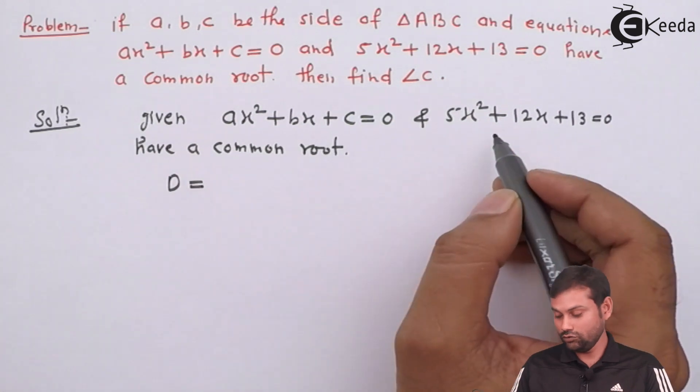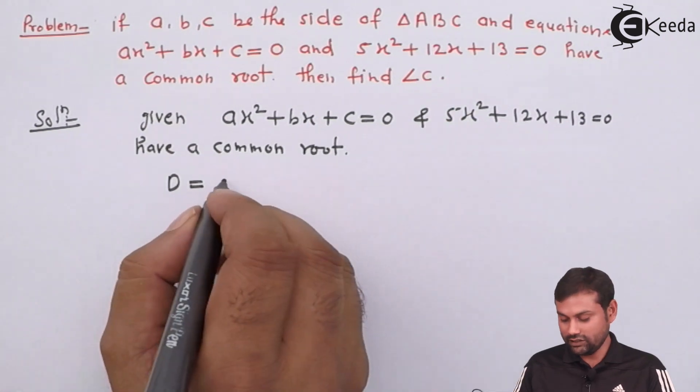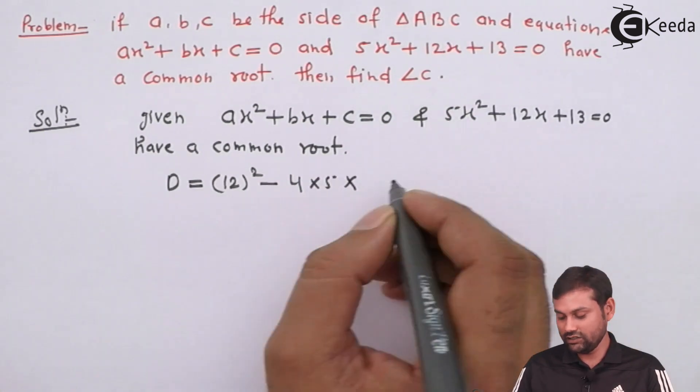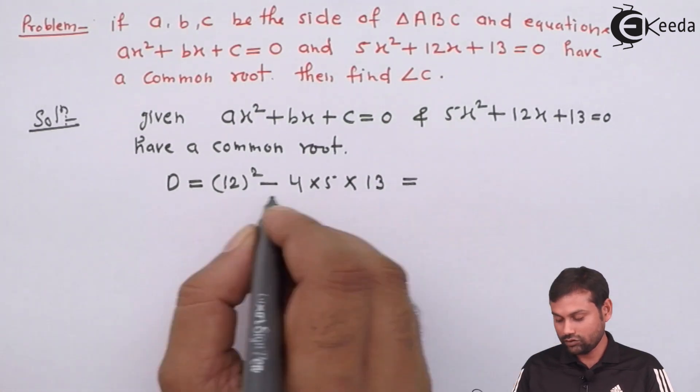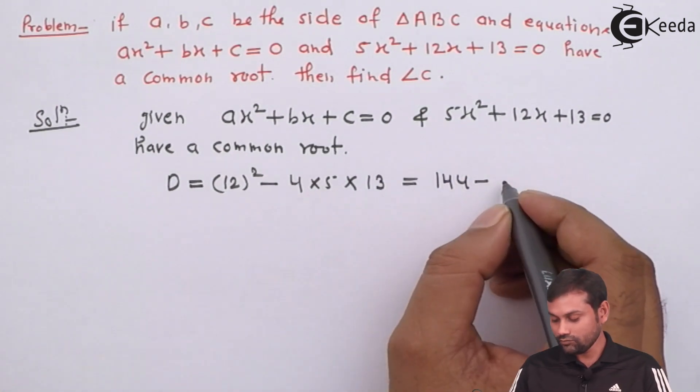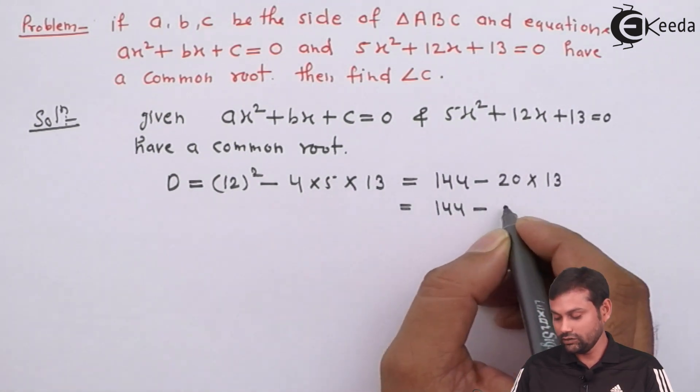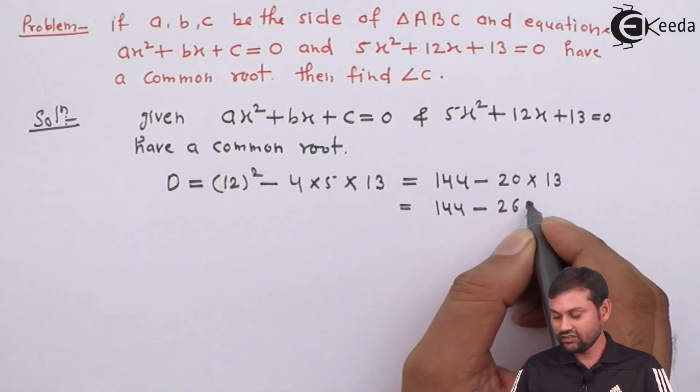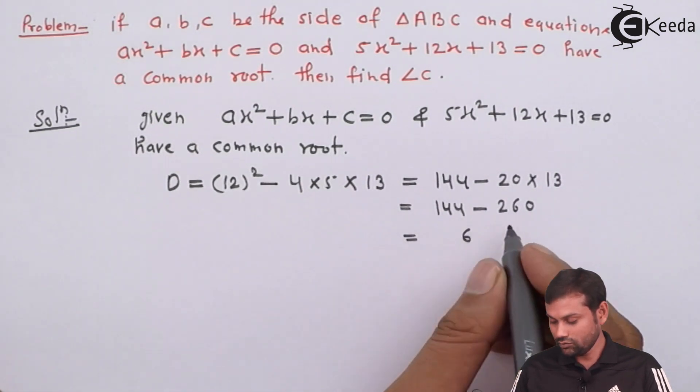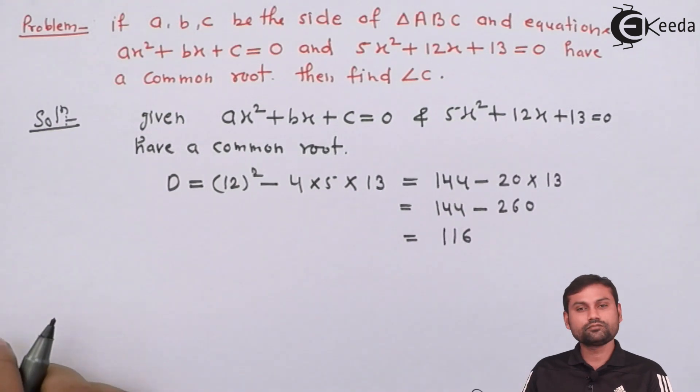So, D is equal to this quadratic equation. So, D equals to B square. That is 12 square minus 4A is 5 and C is 13. So, 12 square is 144 minus this one is 20 into 13. So, 144 minus 260 and this is 6, 1 and 1.